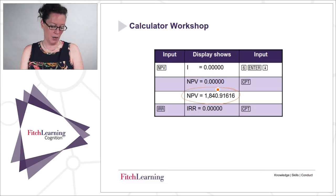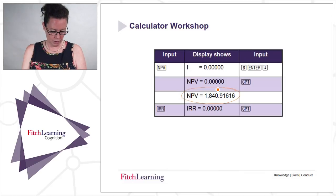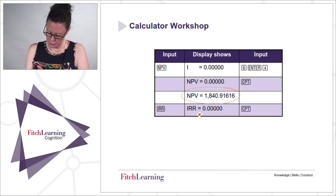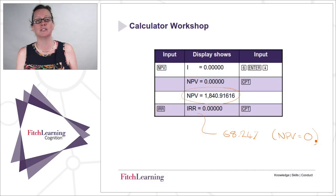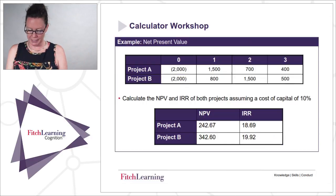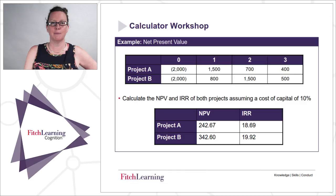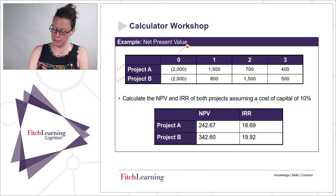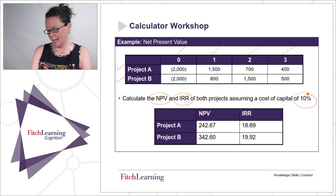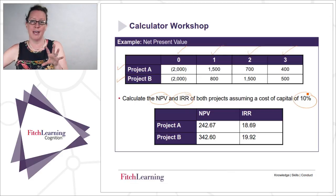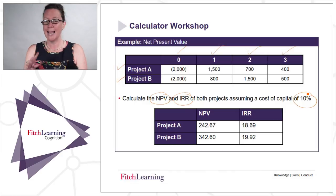For IRR, push the IRR button, then compute, and you get an IRR of 68.24%. Remember, the IRR is the discount rate for a set of cash flows that gives those cash flows a net present value of zero. There's a practice calculation with two projects A and B — initial investment at time zero and inflows over three years. Calculate the NPV and IRR of both assuming a cost of capital of 10%.